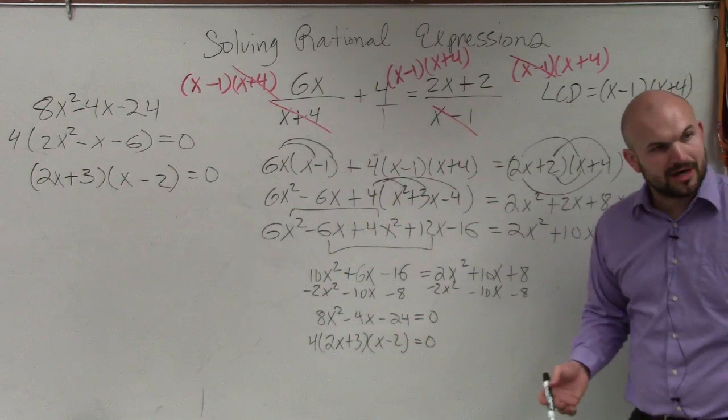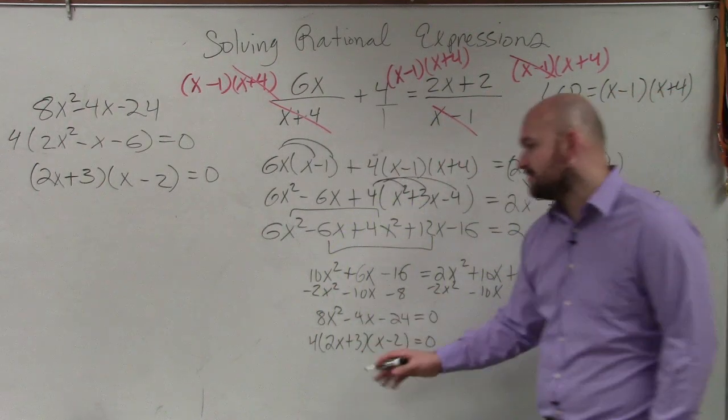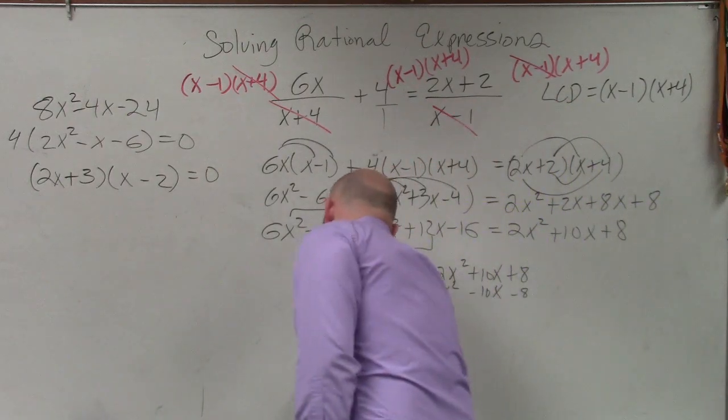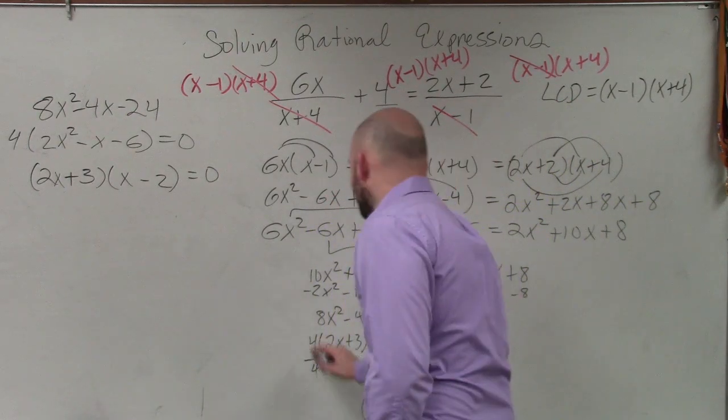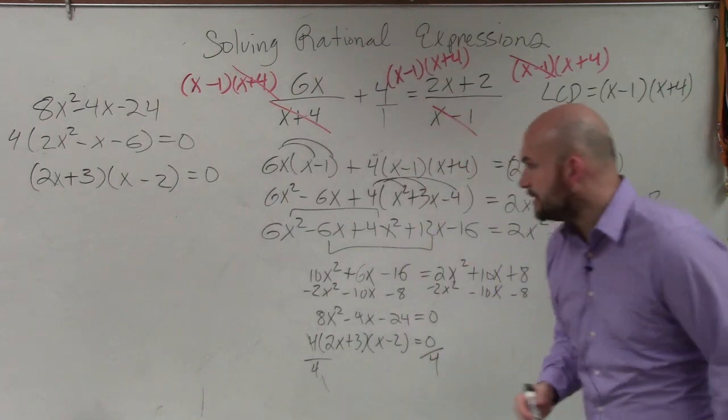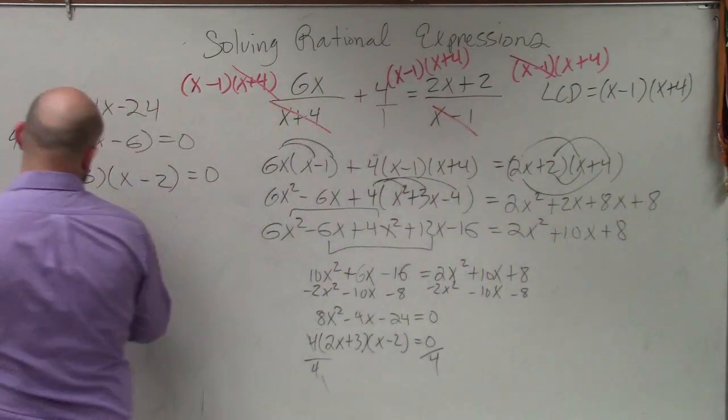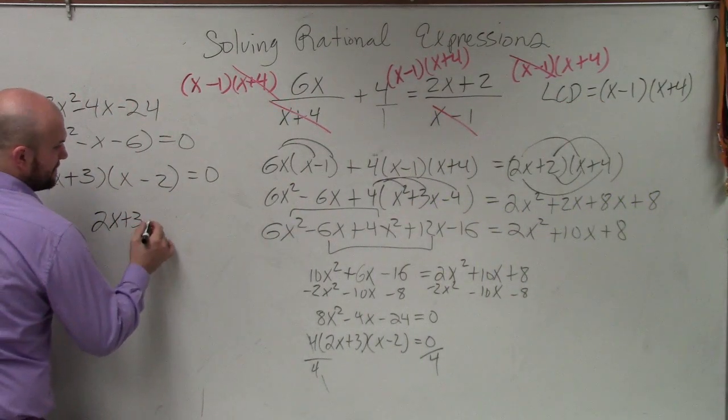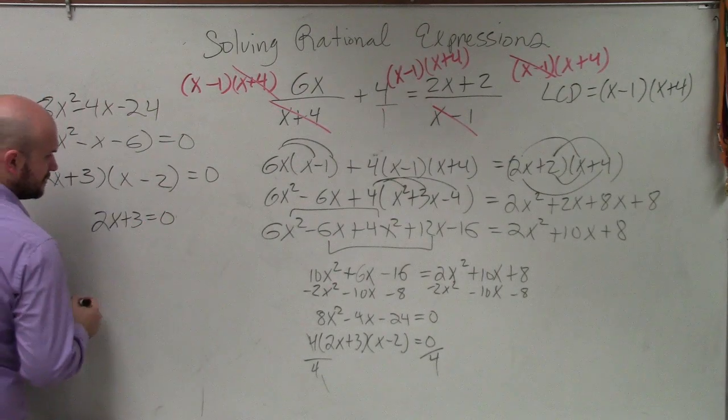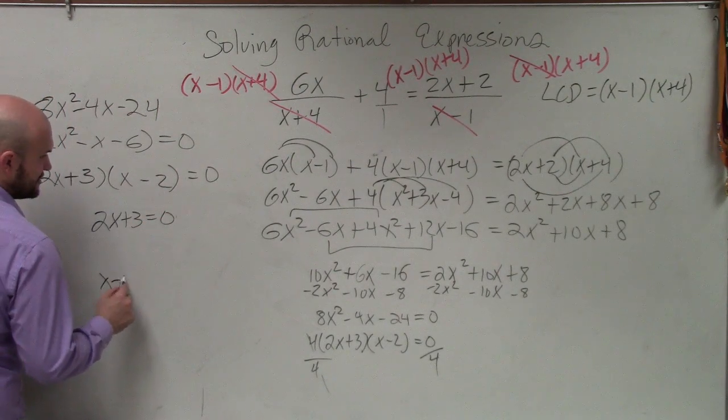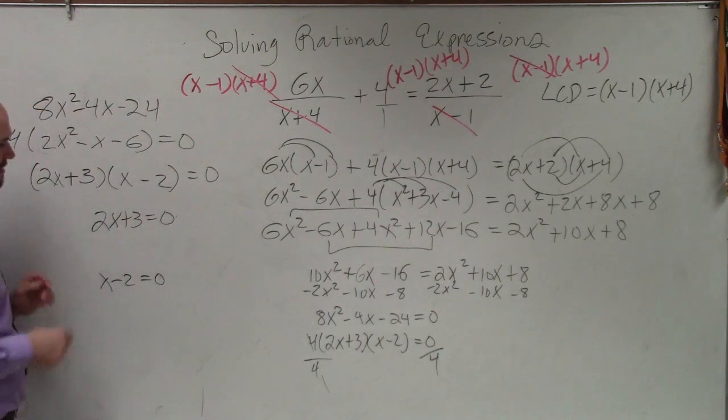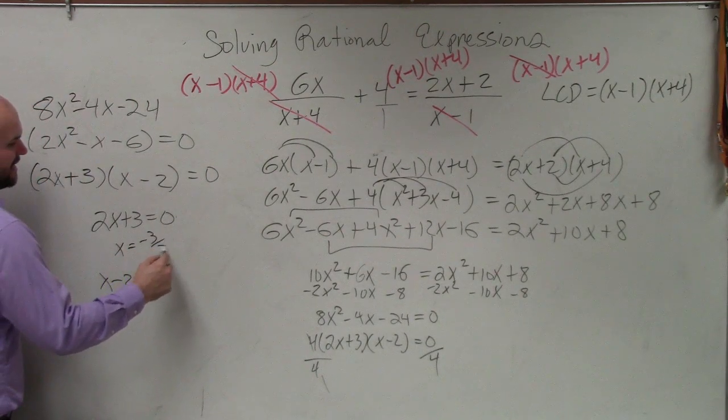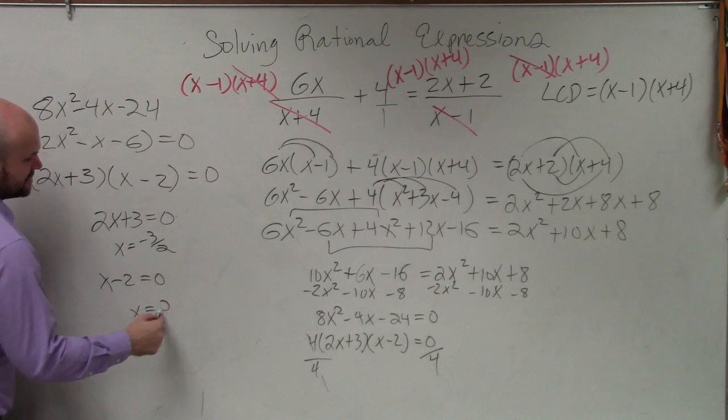And now, ladies and gentlemen, I have the zero product property. Now, first of all, you guys can know that you can divide by 4 on both sides. 4 is really not going to affect our answer. So basically, we have 2x plus 3 is equal to 0 and x minus 2 is equal to 0. So therefore, our final answer is x equals negative 3 halves and x equals 2.